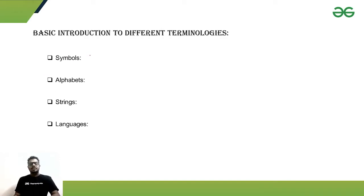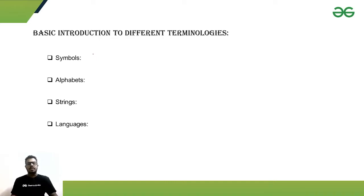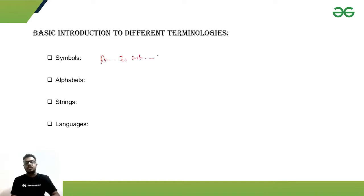First, symbols. A symbol is basically any sign that represents a single unit. We'll be using symbols in various phases of our discussion of Theory of Computation, especially in DFA and NFA. Symbols can be any alphabet — a, b, c up to z — small letters, Greek alphabets, or numeric symbols.